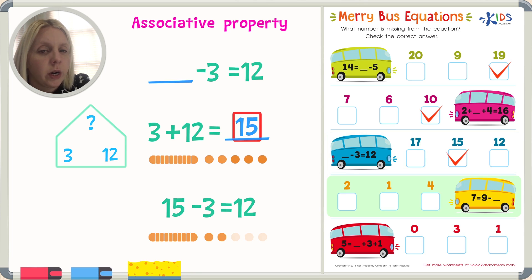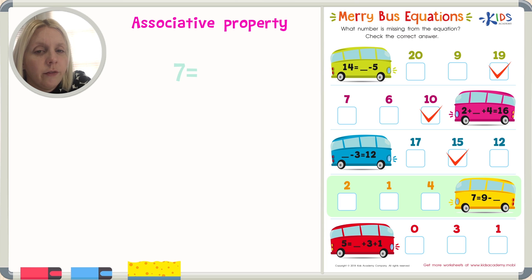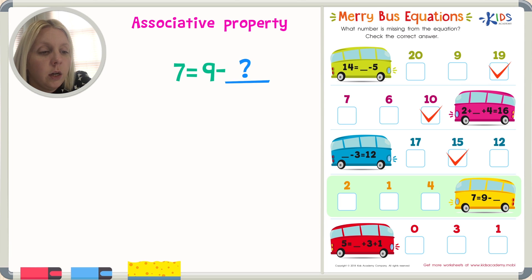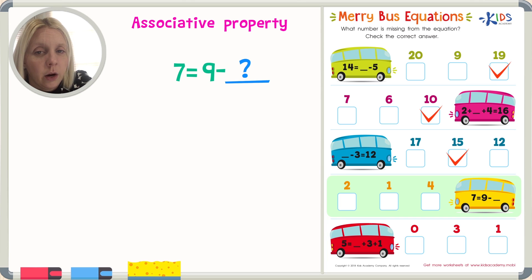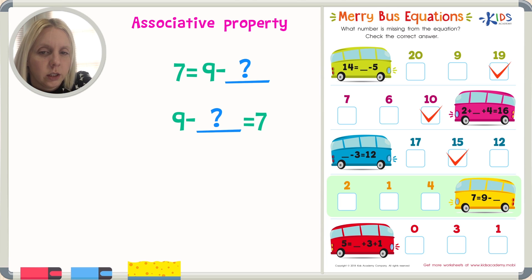Let's go on down to our yellow bus. We've got seven equals nine minus something.